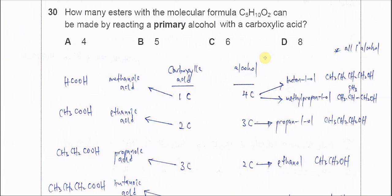Question 30. How many esters with molecular formula C5H10O2 can be made by reacting a primary alcohol with a carboxylic acid? So first we need to consider how many carbons are in this ester. Five carbons, and we can list out the combinations of alcohol and carboxylic acid that are involved.